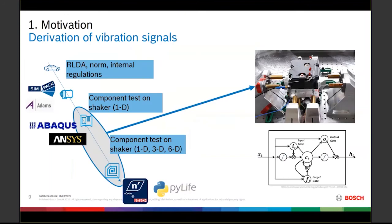Let's start with the load derivation itself. Some of you may know the V of reliability from our house of reliability. On the left side we have the load derivation based on a system, and we break the system load down to a stress on a single design element. In our case, we have a vehicle as a system and we break it down from an electrical power unit to an electrical control unit, down to any design element on that ECU, such as a capacitor or resistor.